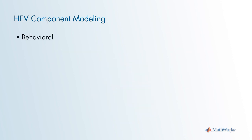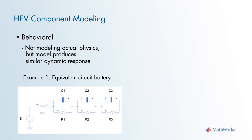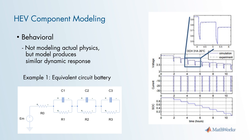Finally, behavioral modeling involves not modeling the actual physics, but making the model produce a similar dynamic response. An example is representing a battery as an equivalent circuit of one or more resistor, capacitor, or RC pairs. It is difficult to model the electrochemistry occurring in a physical battery; however, by using an equivalent circuit scheme, you can produce a very similar dynamic behavior. A MathWorks white paper shows how a behavioral battery model is able to match real test data.